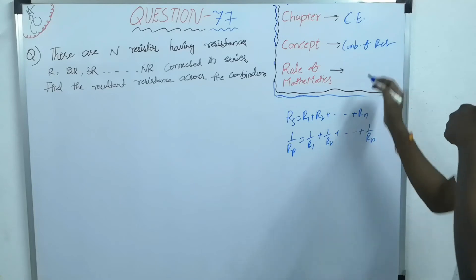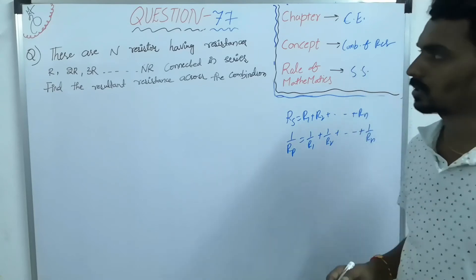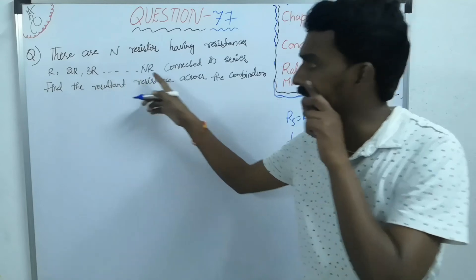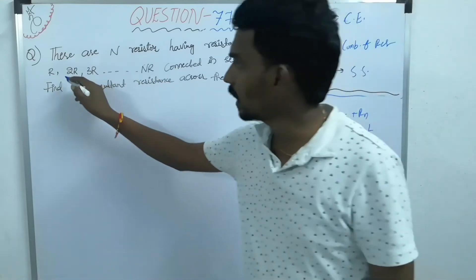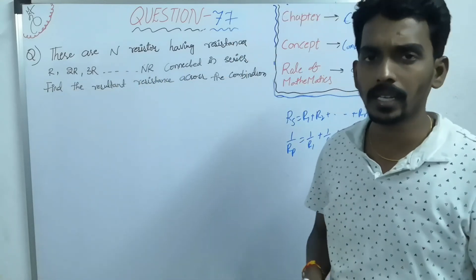And again we use the sum of natural numbers. So here how many resistors are connected? There are n number of resistors connected in series.